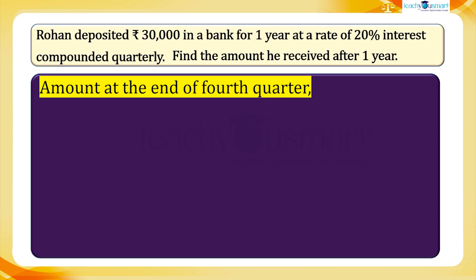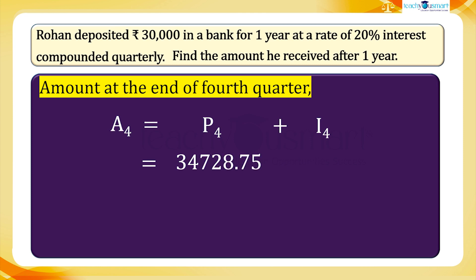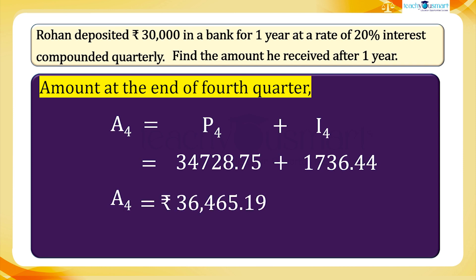Then the amount at the end of the fourth quarter: A4 equals P4 plus I4, equals 34,728.75 plus 1,736.44, equals 36,465.19 rupees. This is the amount to be received after one year.